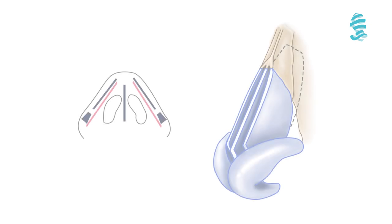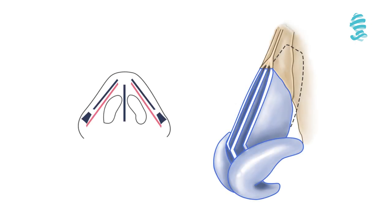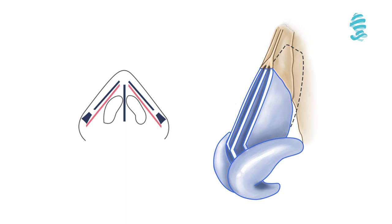After removing the bony hump, osteotomies — which means cuts on the bones — should be done to close the open roof and narrow the bony improvement in the majority of cases.